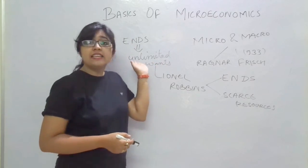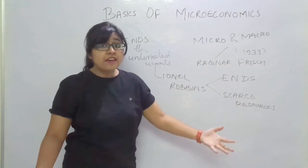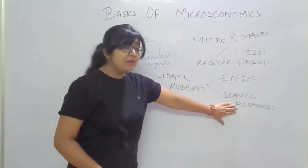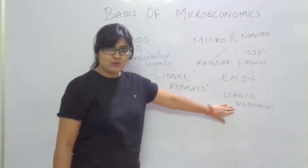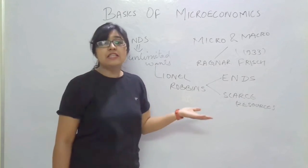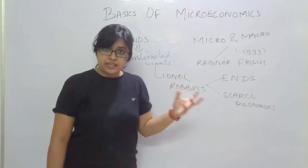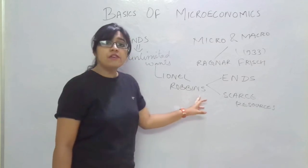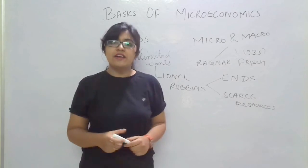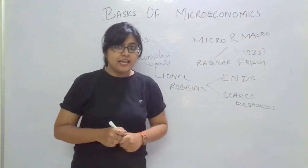The ends are the unlimited wants of a man, and from where would he satisfy the unlimited wants? From the limited or scarce resources. This concept itself is the problem of scarcity, and that is why Lionel Robbins has given this definition to make us all understand the problem of scarcity in economics.